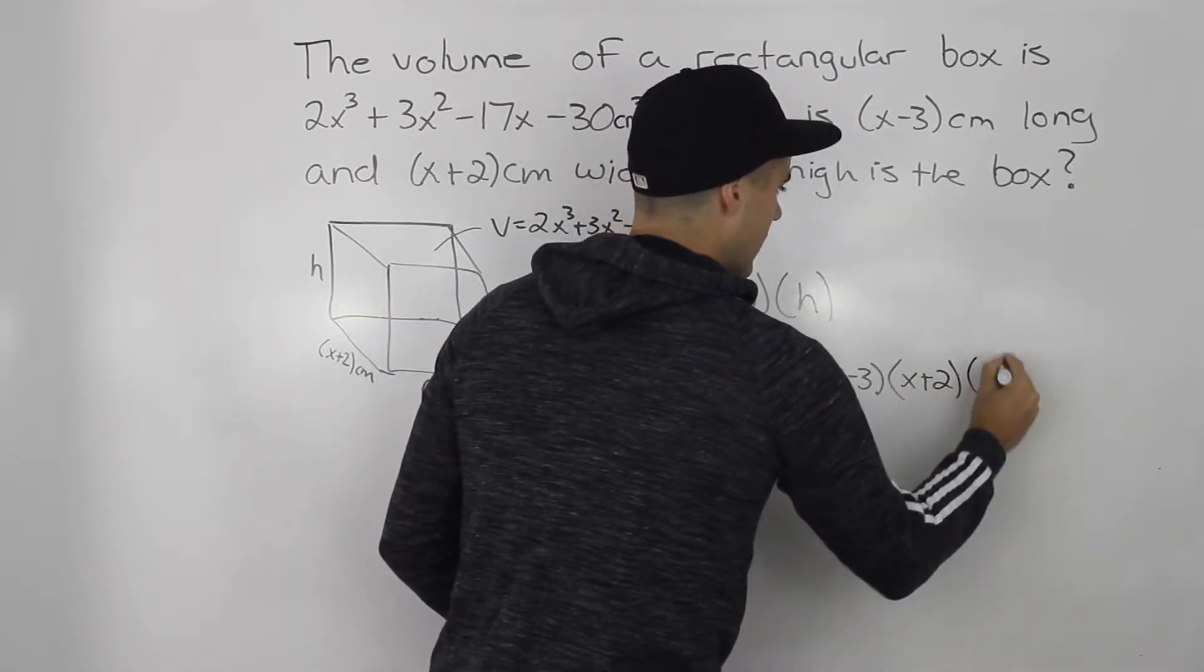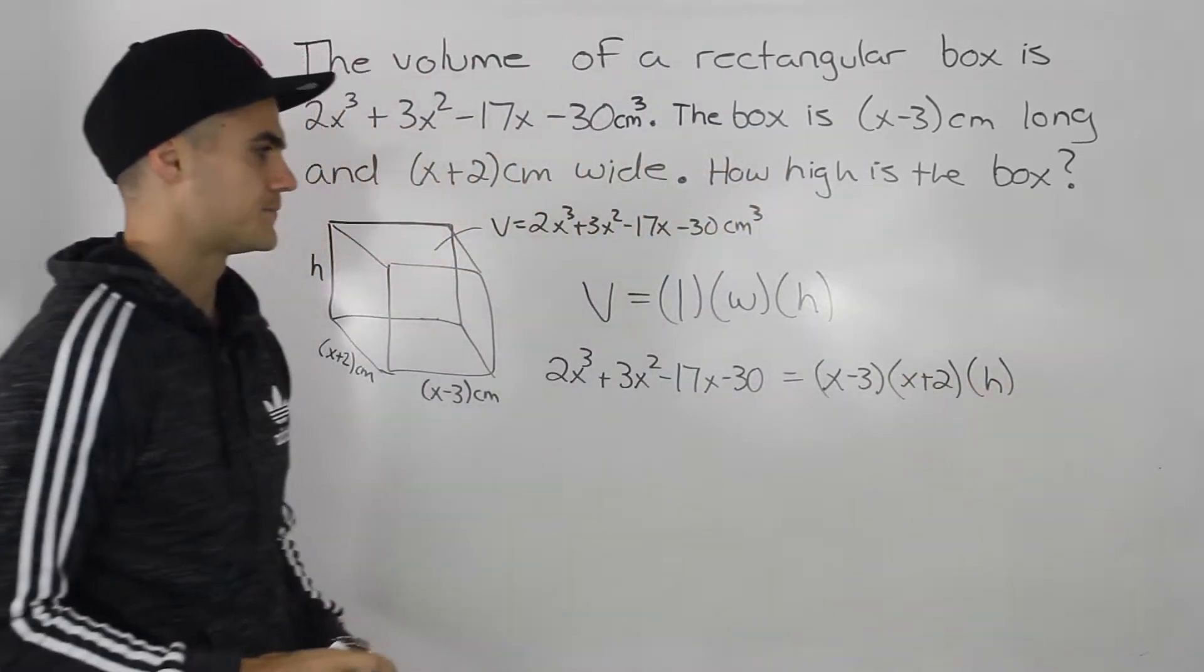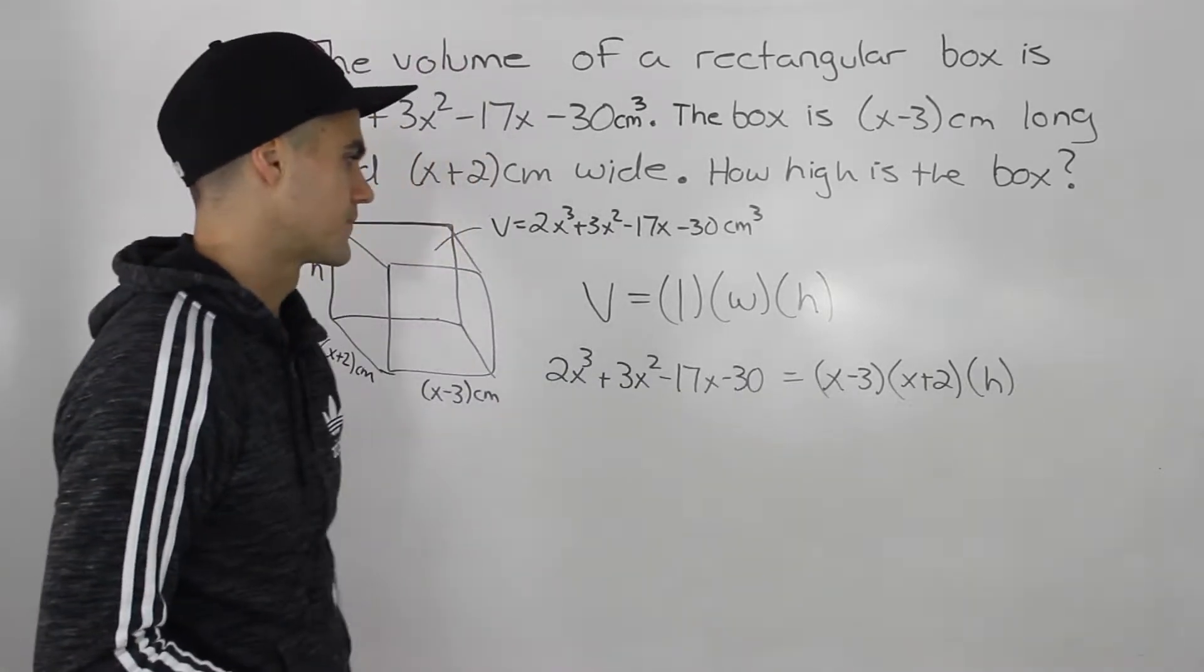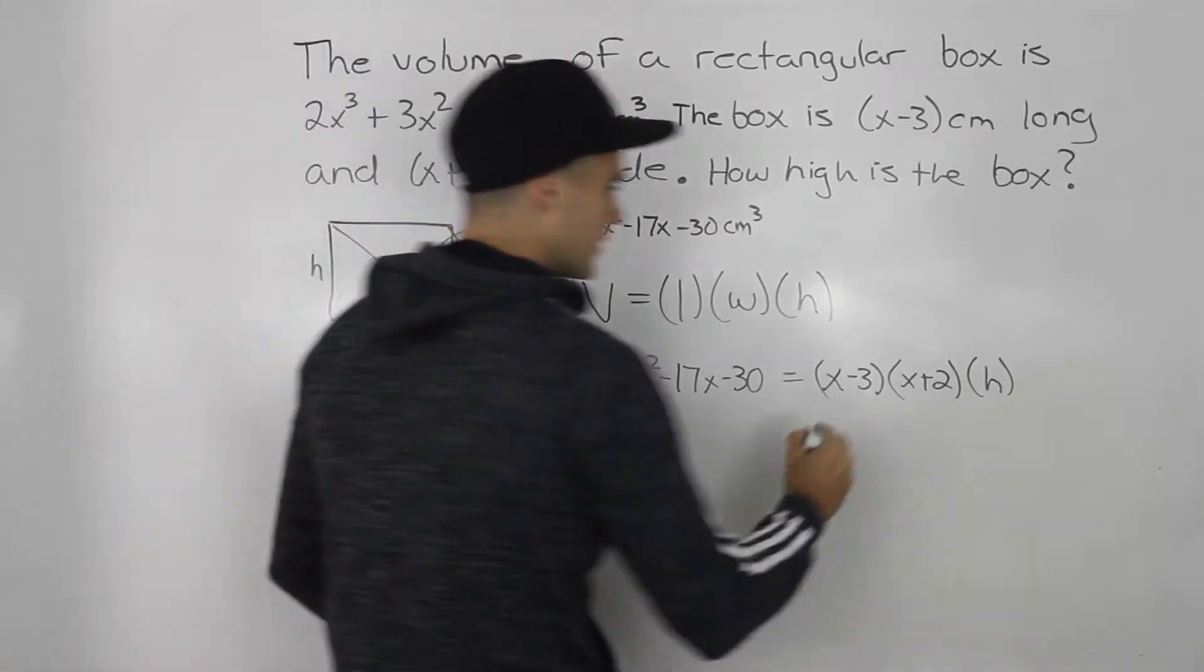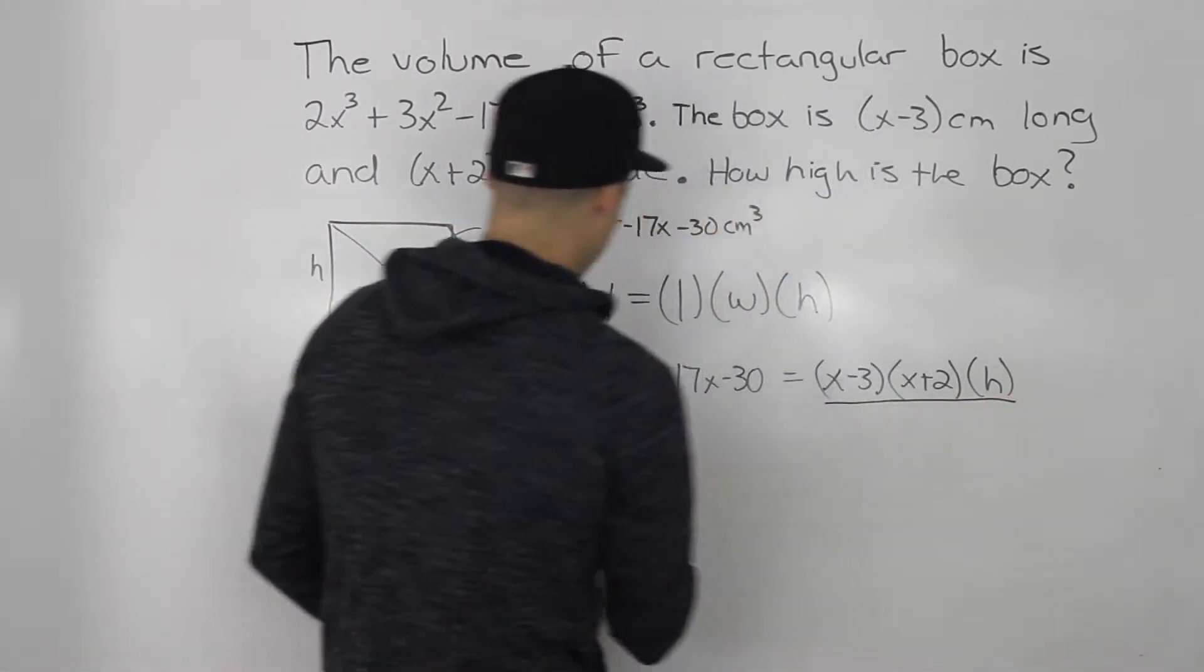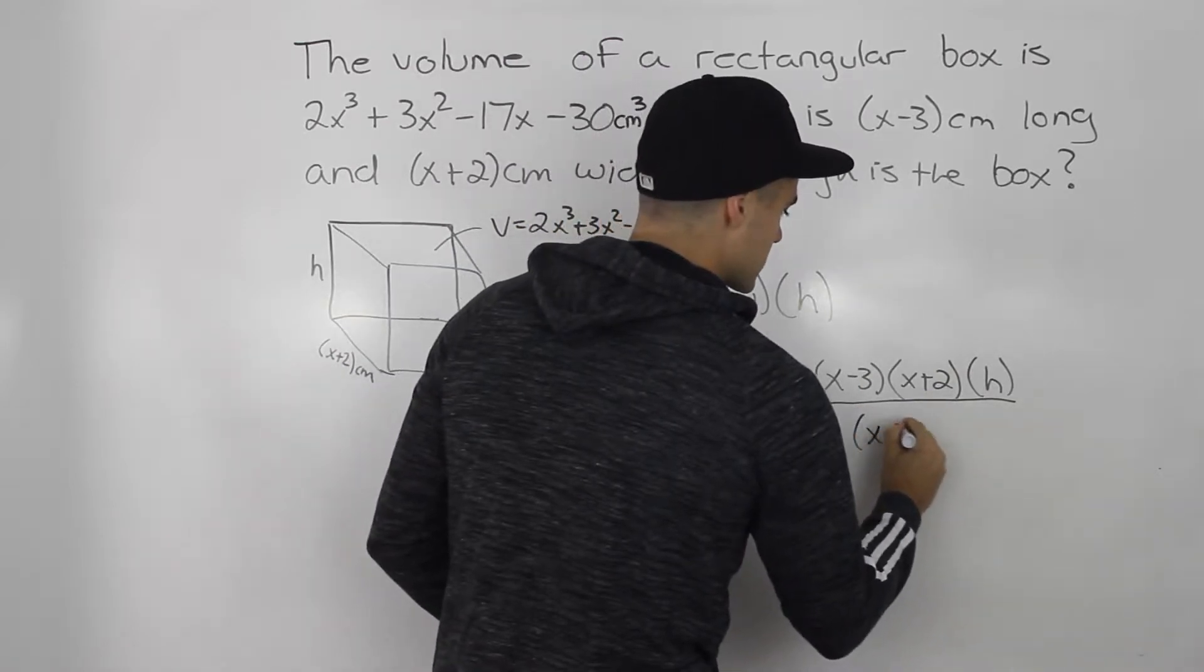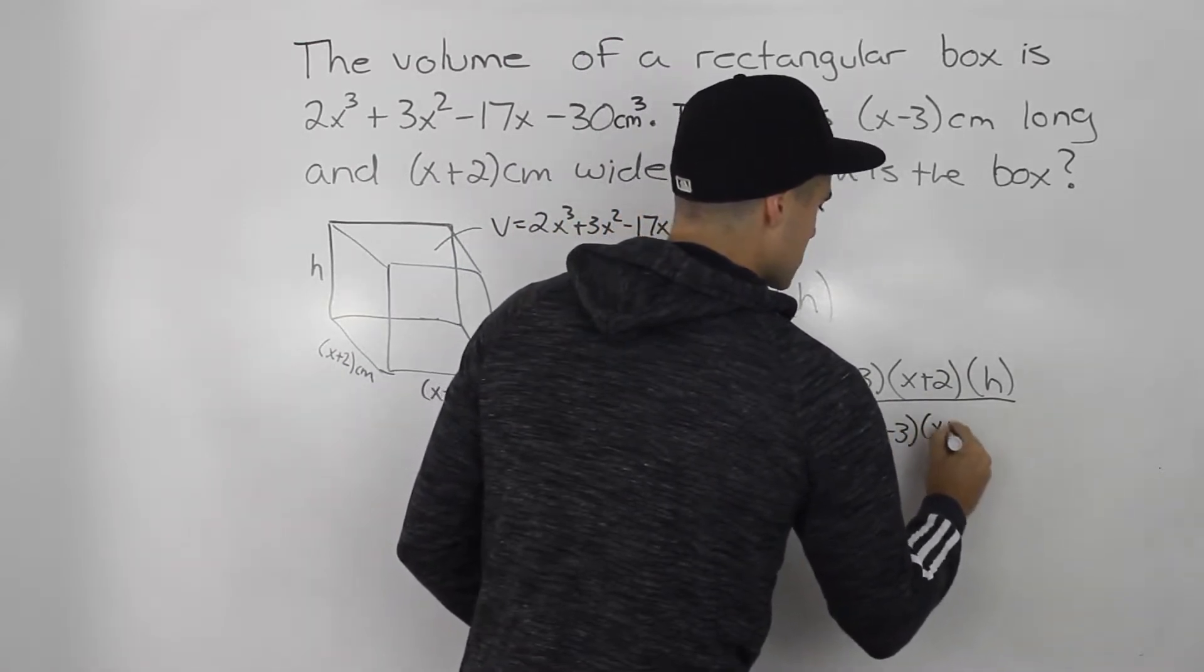The width is this (x+2). And then the height we are solving for. So how can we isolate for this h here on the right side? Well, what we can do is we can divide both sides by these two expressions, (x-3) times (x+2).